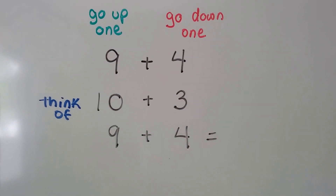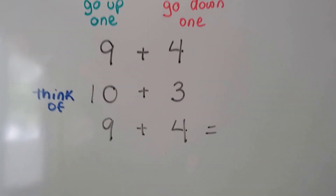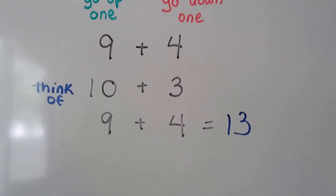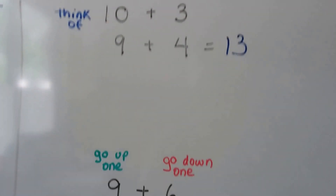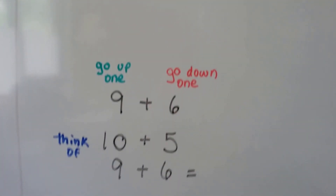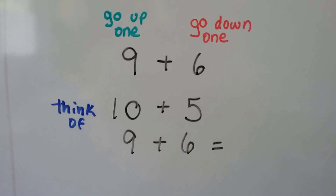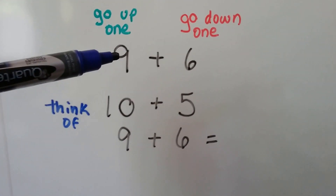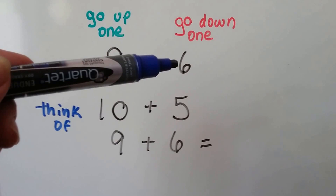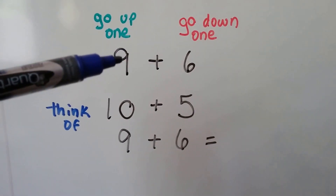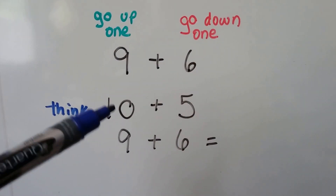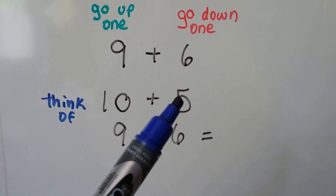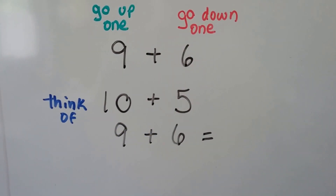So we know 9 plus 4 is 13. Let's try it again — we have 9 plus 6. We go up 1 with the 9, we go down 1 with the 6, because we're going to give that 1 to the 9 to make a 10. So we think 10 plus 5.